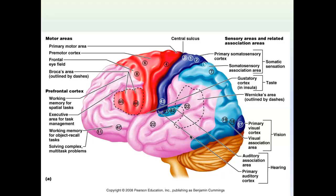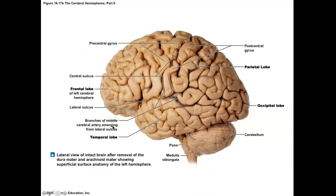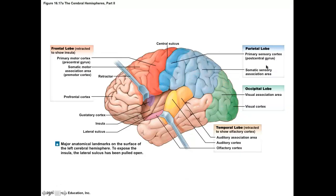The occipital lobe, shown in green, is the visual cortex. Your eyes pick up images from the outside world onto the retina, which sends electrical signals to the occipital lobe. What your brain receives is essentially electricity coming in at different areas and tempos. The primary visual cortex receives that information in the darkest green area, then integrates information from different regions.